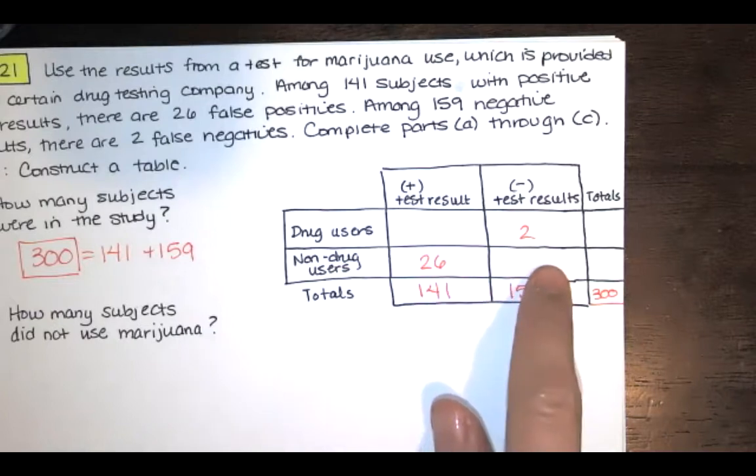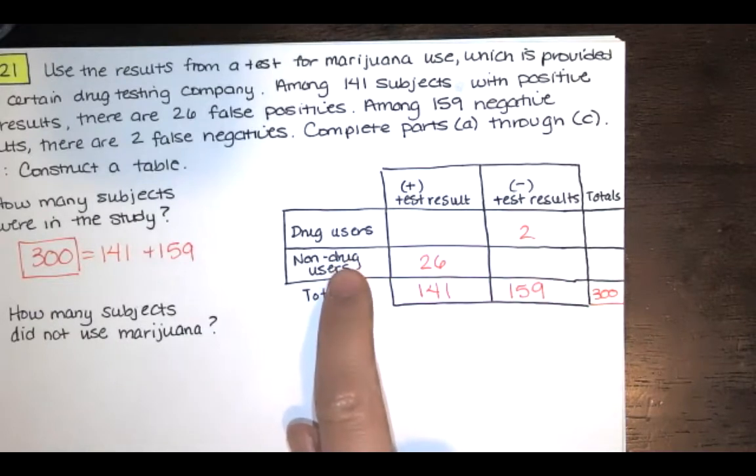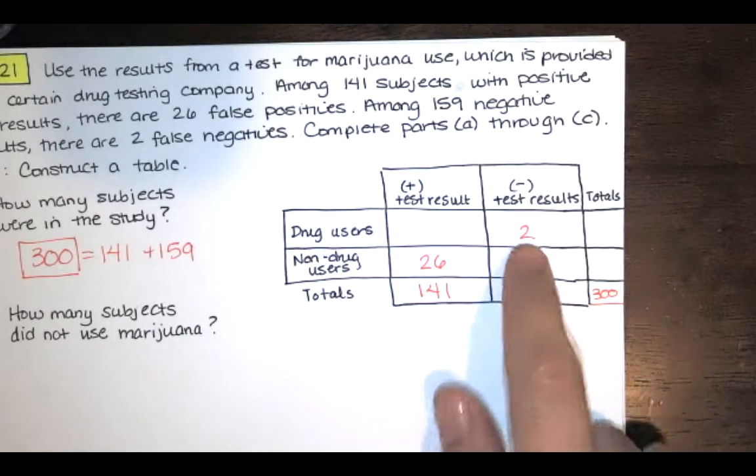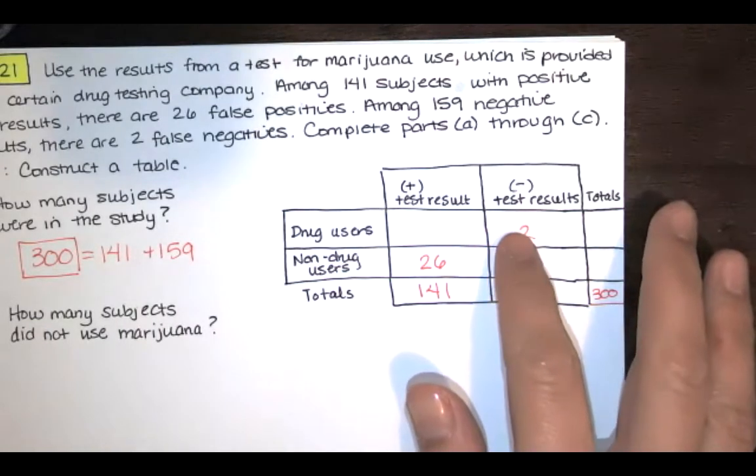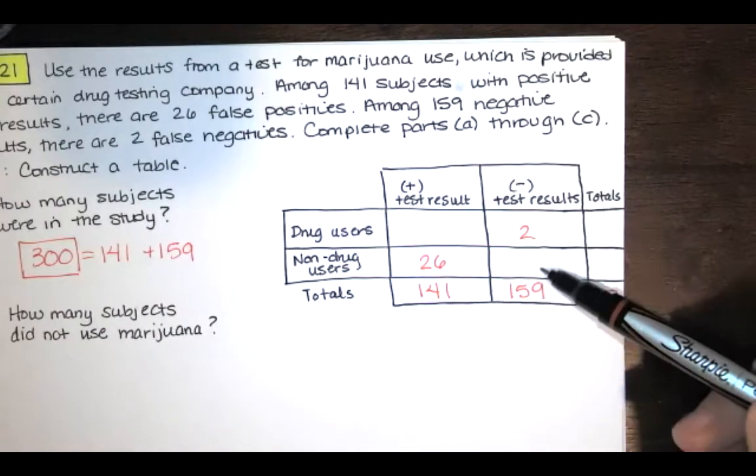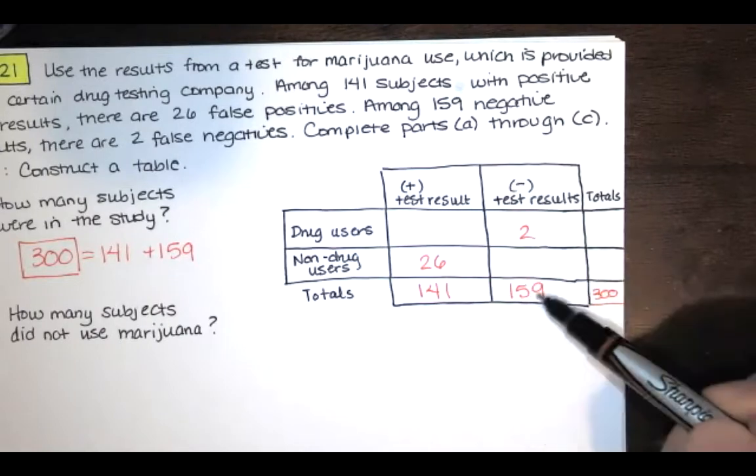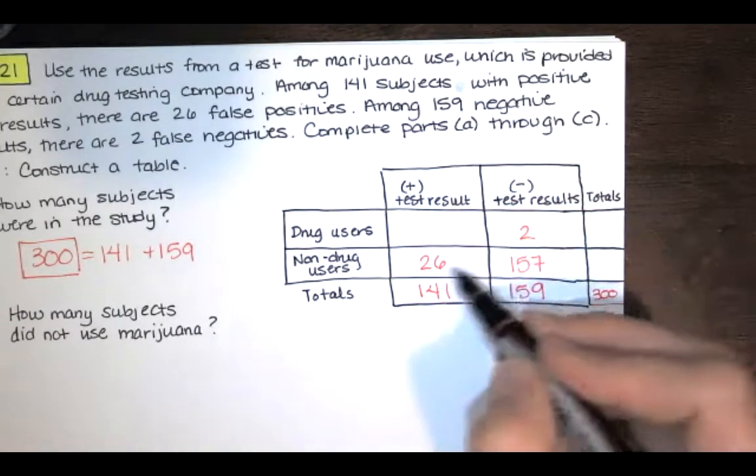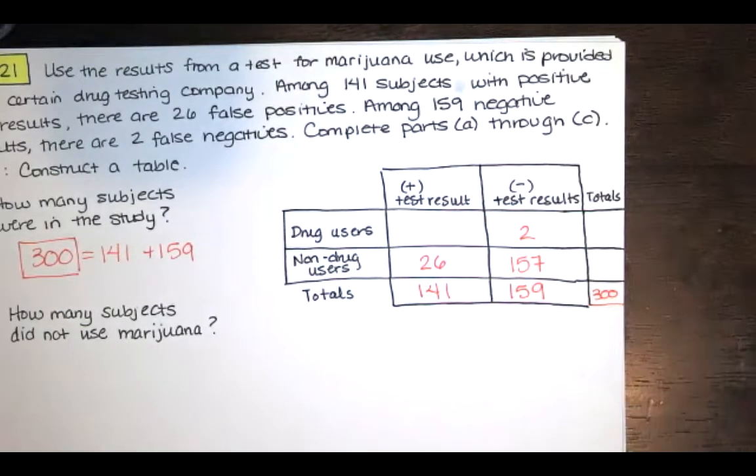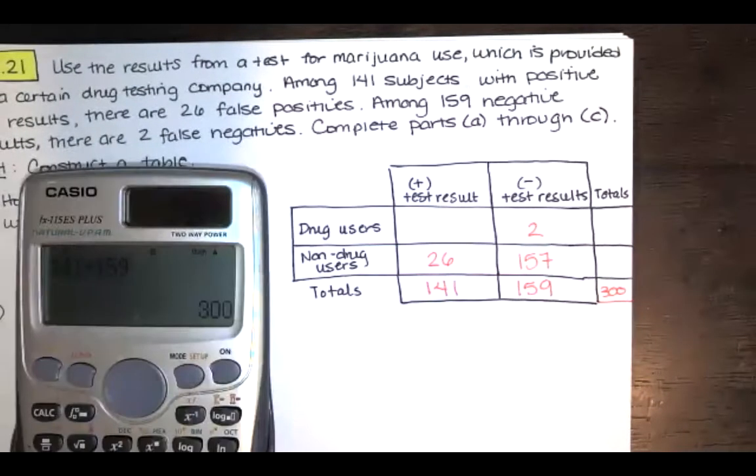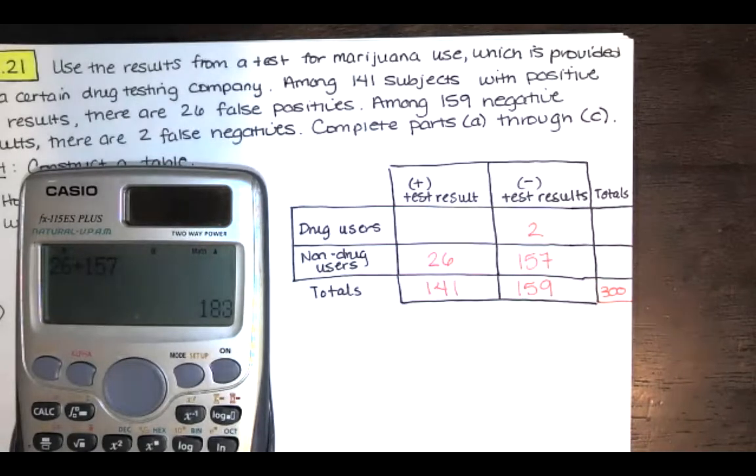Now, I don't actually have the number of subjects that did not use marijuana from the negative test results group, but we can infer it. If you had 159 negative test results and two of those results were false negatives, so we had drug users that got a negative test result, everyone else in that 159 must have been a non-drug user that got a negative test result. So if there were 159 of those and two of these, this must be 157. And then we can add these two guys together to get the total number of non-drug users. So we will have 26 plus 157 and that's 183.